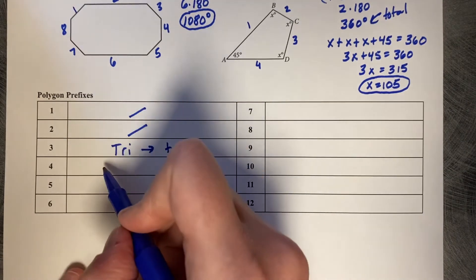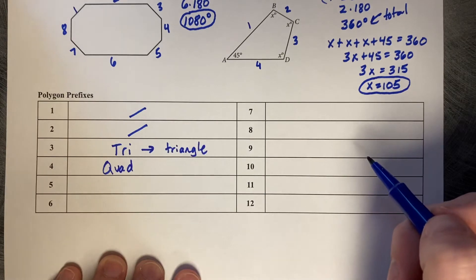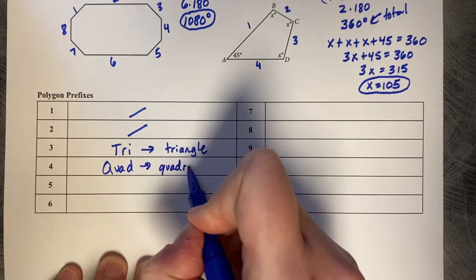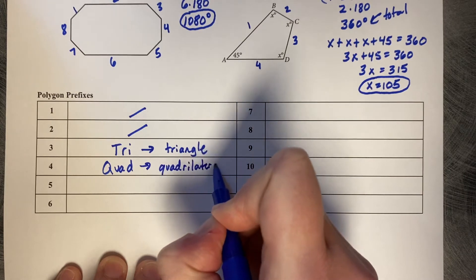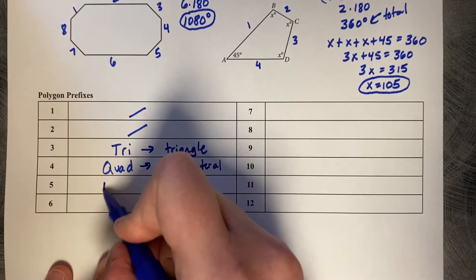A four-sided figure, the prefix is quad. We call it a quadrilateral, not a quadgon. You could call it a quadgon, but it's quadrilateral. A five-sided figure is a penta.